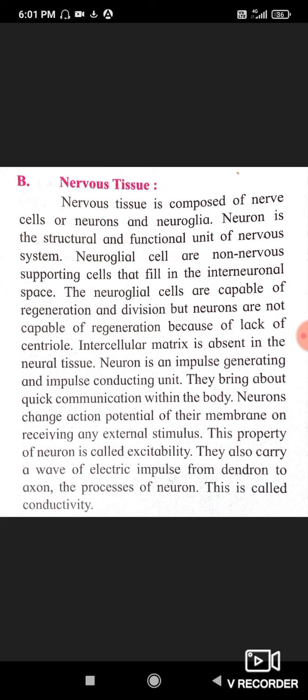Neuron is the structural and functional unit of the nervous system. Neuron को nervous system का structural and functional unit बोला जाता है क्योंकि nervous tissue का जो function है — conduction of impulses — वो function neuron perform करता है। nervous tissue neurons से बना हुआ होता है इसलिए neuron structural and functional unit हो गया nervous system का।